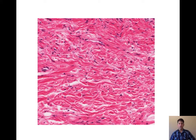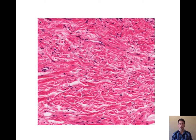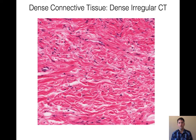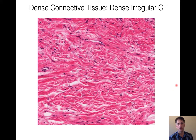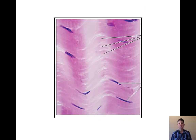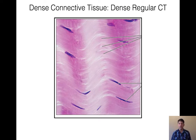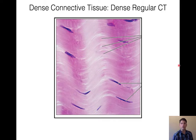Let's start with a little practice. What do you think we have in this image? Use those observation skills. Here we have dense connective tissue — specifically dense irregular connective tissue. One thing you'll notice is that these fibers are moving in all kinds of different directions. How about this one? Hopefully you said dense connective tissue again, but this time it's dense regular connective tissue. The fibers are nice and parallel, wavy, and orderly.